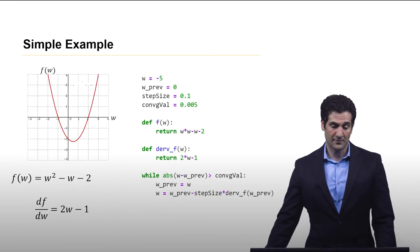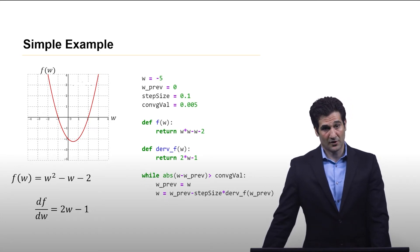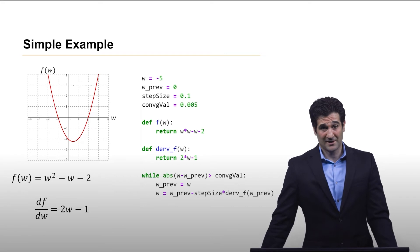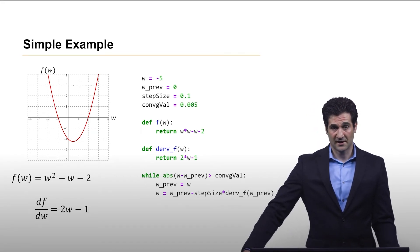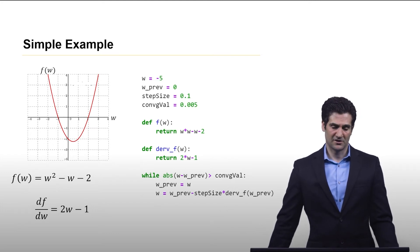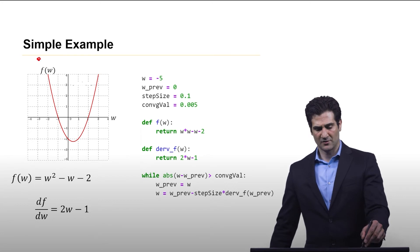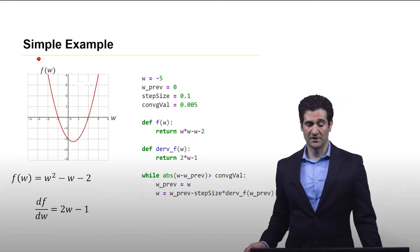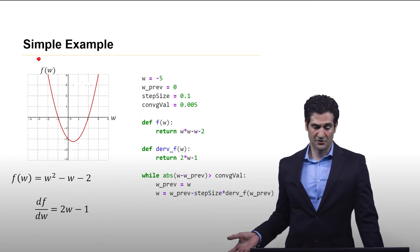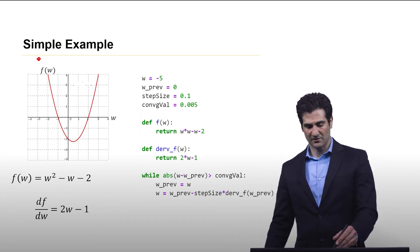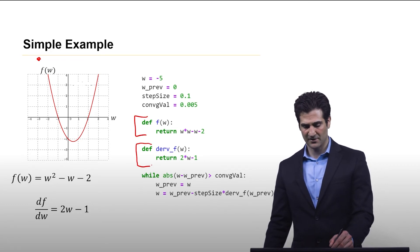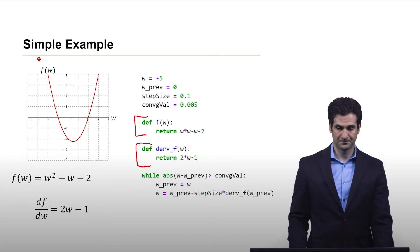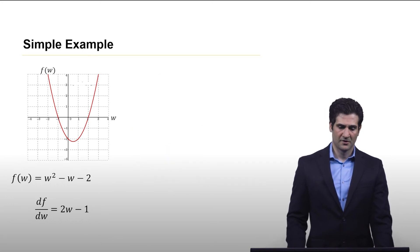So let's look at a quick example. Here is this two-dimensional function, w squared minus w minus 2. The derivative is written below. And on the screen is some actual Python code you can also use on your own to follow along. We start out with our weight vector initiated at negative 5, so way up here somewhere. We have a step size of 0.1 and convergence of 0.05. So when that weight changes by less than 0.05 we stop. We have some definitions. We've defined w, and we've defined the derivative, hard-coded here. And the rest is that while loop that you saw in the previous slide.